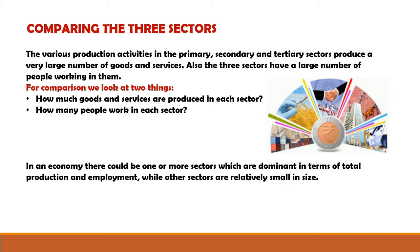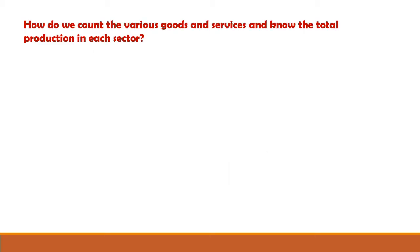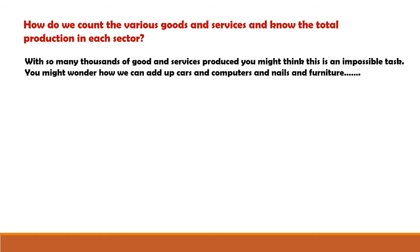When we compare the three sectors we get to know in which sector more production is there, or in other words more money is generated, and by comparing the number of people working we see which sector is giving more employment to the people. How do we count the various goods and services and know the total production in each sector? It is one of the very difficult tasks. With so many thousands of goods and services produced, you might think this is an impossible task.